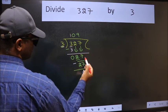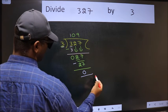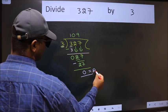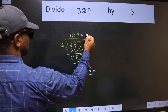No more numbers to bring down, so we stop here. This is our remainder and this is our quotient.